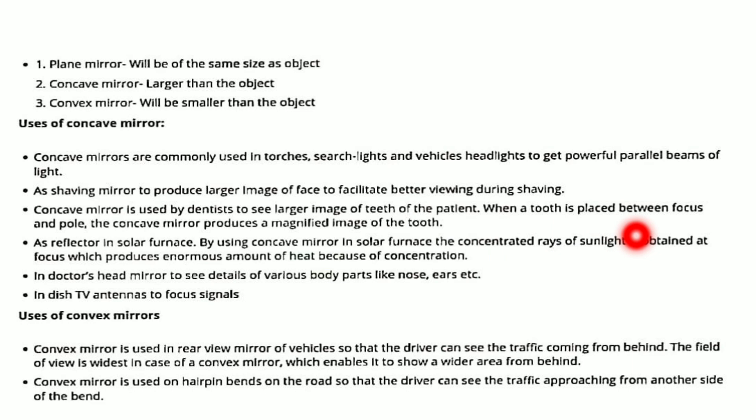The second use of the convex mirror is on hairpin bends on the road. Where there are sharp bends, a convex mirror is placed so that the driver can see traffic approaching from the other side of the bend. Because the convex mirror shows a smaller but wider-area image, it covers the widest area, making it ideal for hairpin bends.